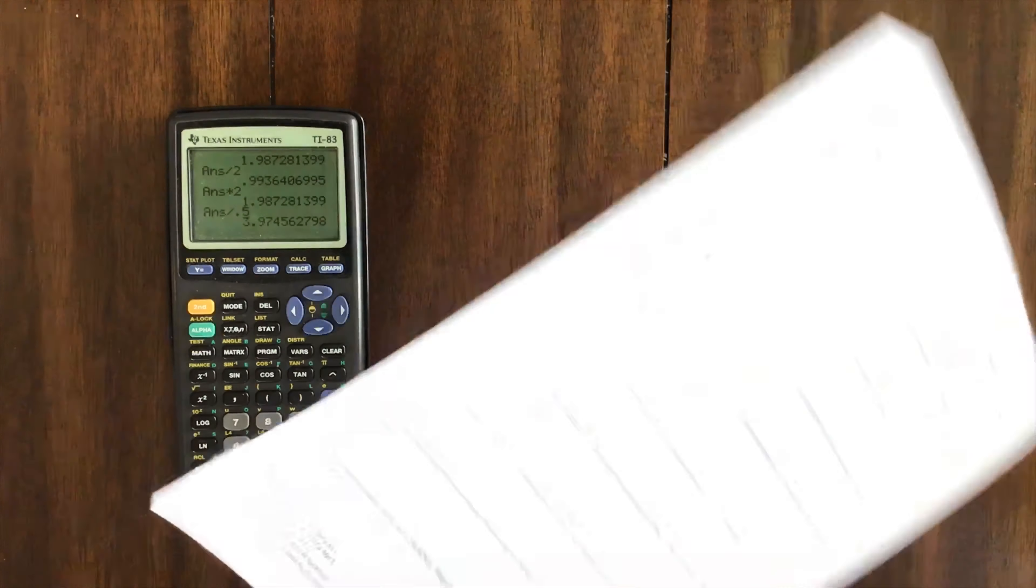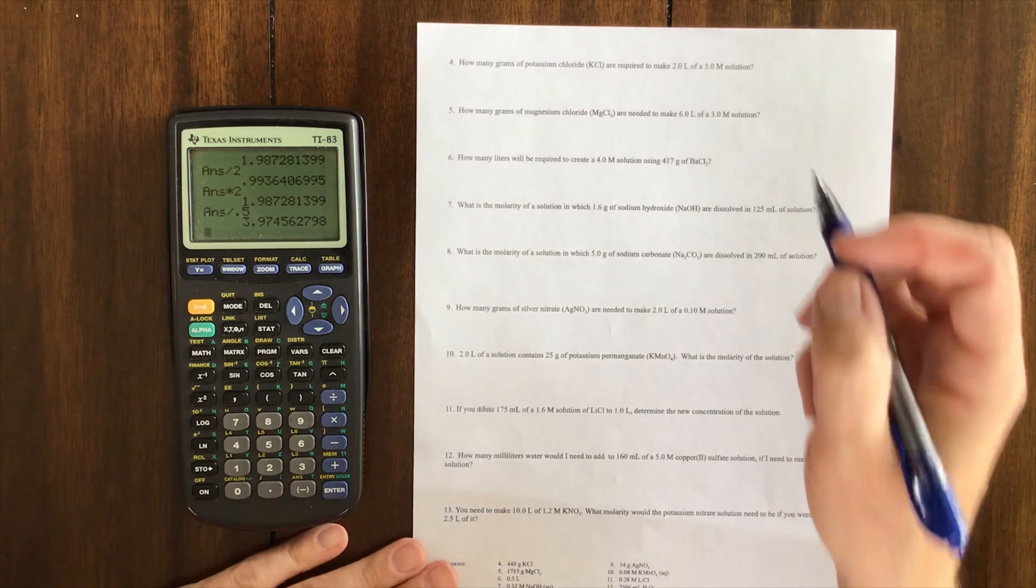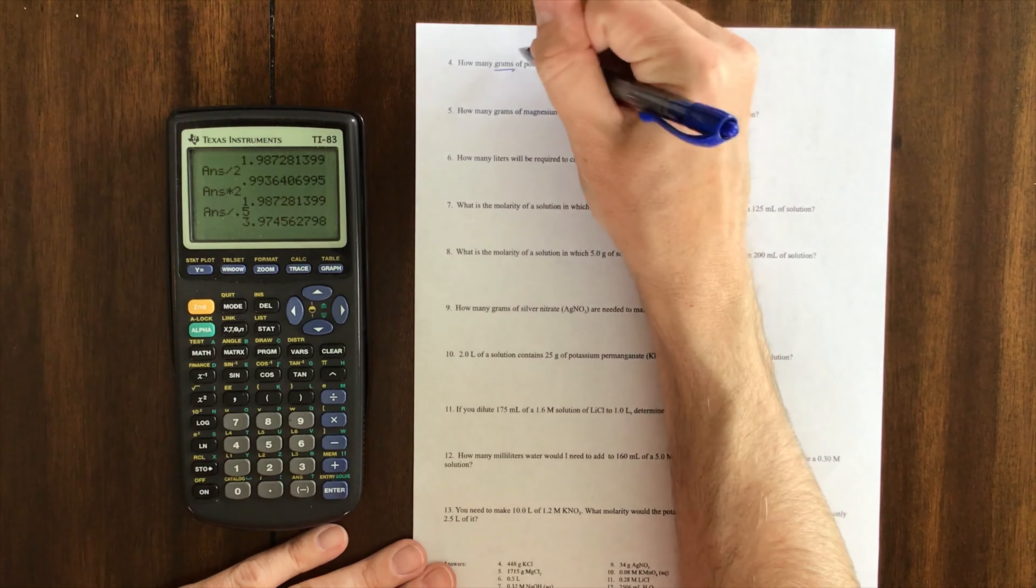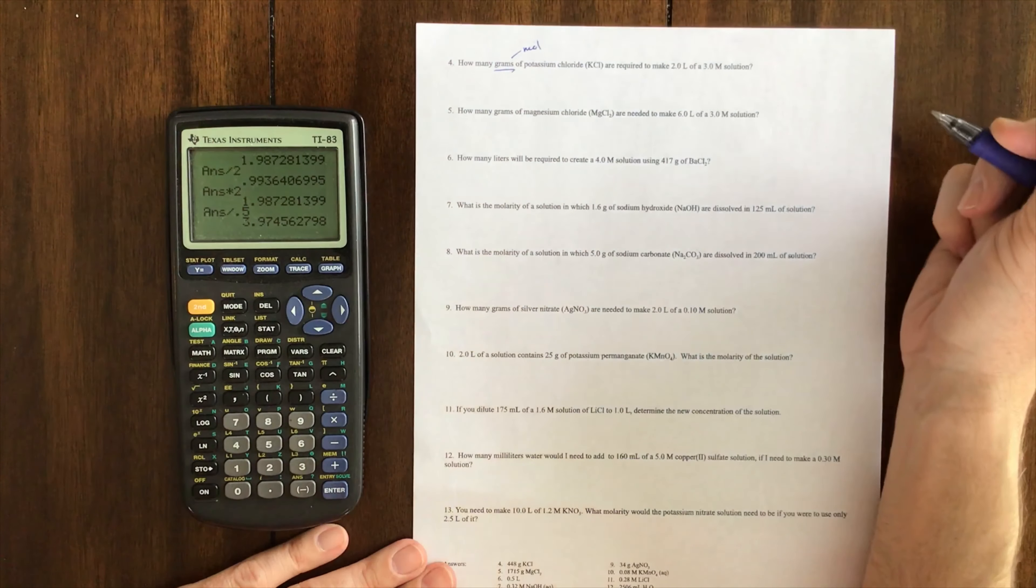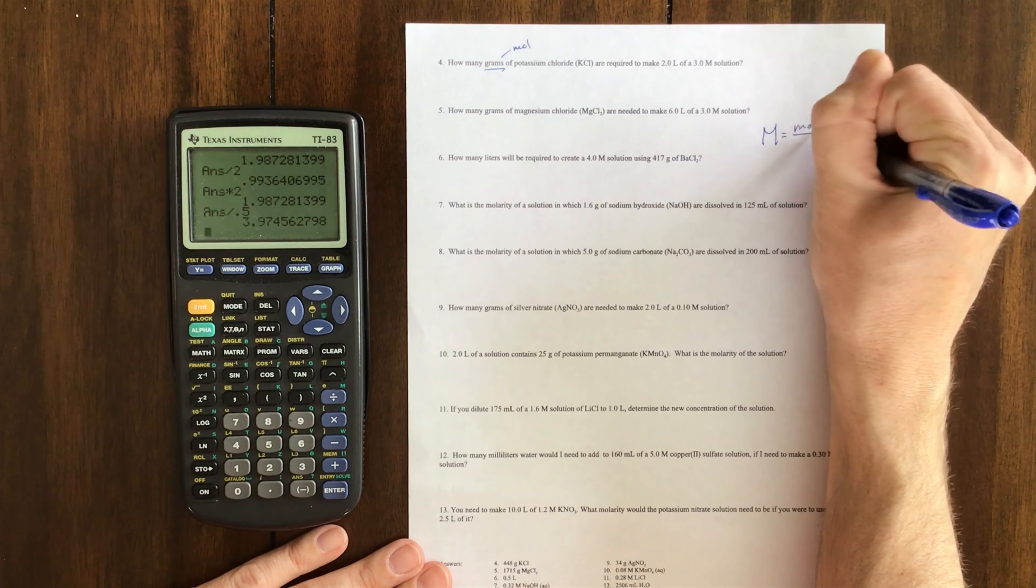When you're looking at the back of the sheet, please understand that anytime you're asked for grams, you probably need to find moles first. Just keep in mind that molarity equals moles over liters. That should hopefully help you out.